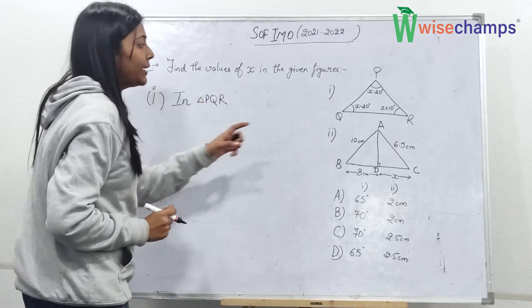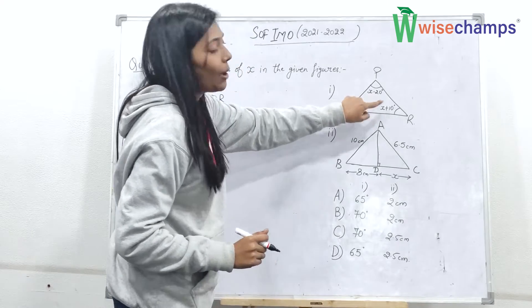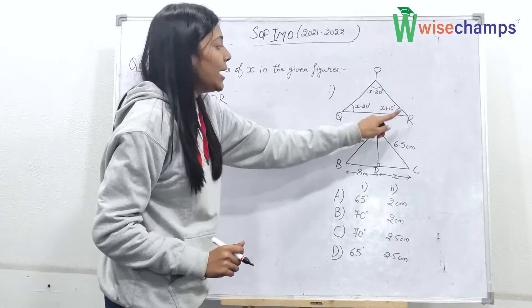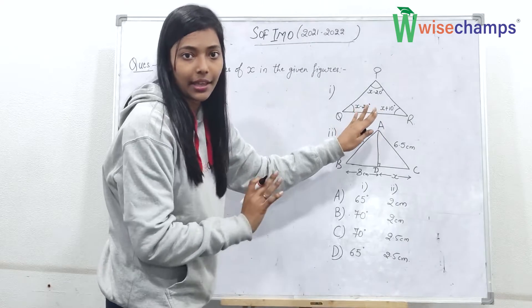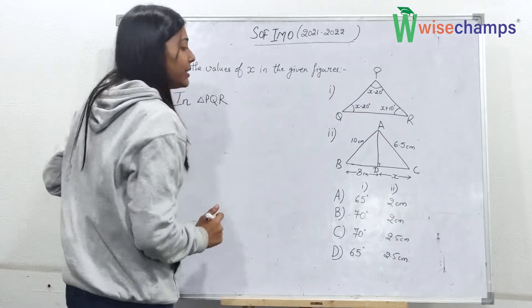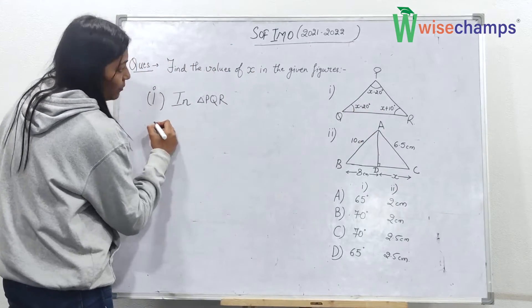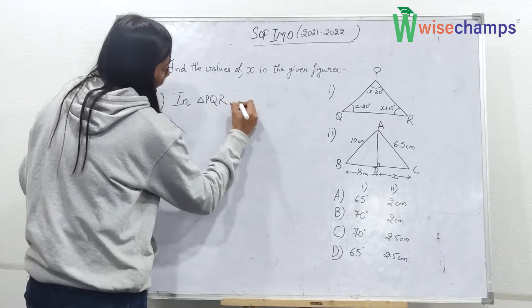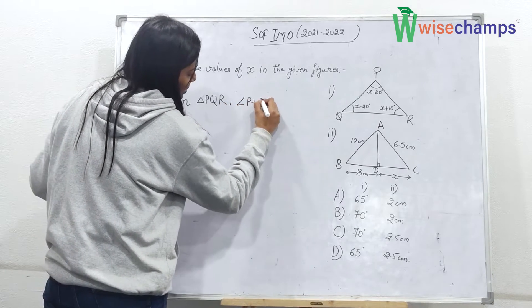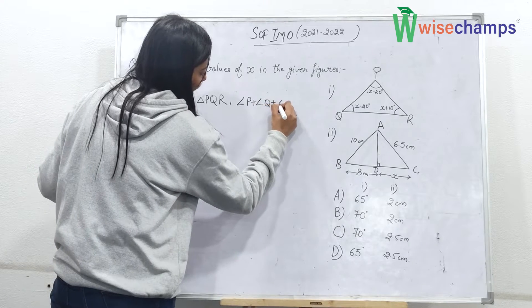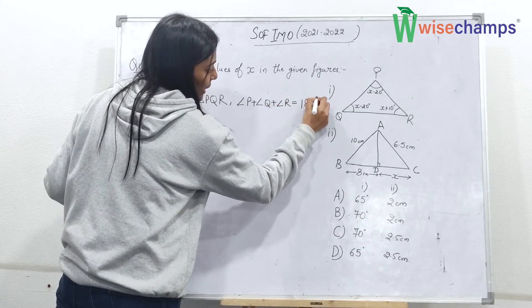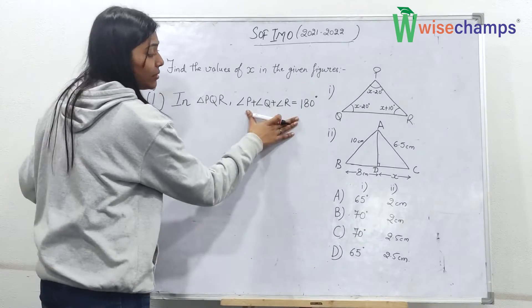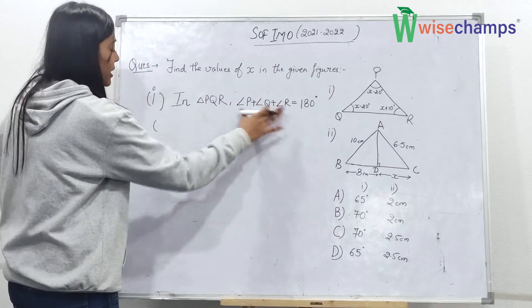So in triangle PQR, we need to find out the value of X. We know that we can use the angle sum property here. So let's apply this angle sum property, which is angle P plus angle Q plus angle R is equal to 180 degrees. This is called angle sum property of triangle.